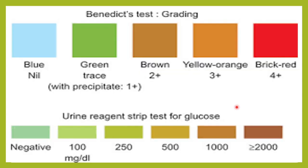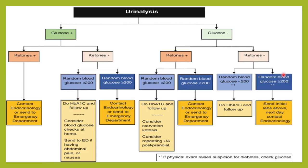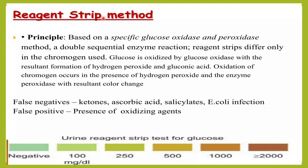On the reagent strip, different colors correspond to different glucose concentrations. A light green color is traces, approximately 100 mg/dL; 1+ is 250 mg/dL; 2+ is 500 mg/dL; 3+ is 1000 mg/dL; and 4+ is more than 2000 mg/dL. In the Benedict's test: blue is nil, green is traces around 100 mg/dL, brown is 2+, yellowish-orange is 3+, and brick red is 4+.